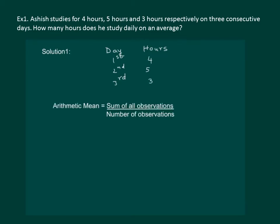We are asked to find the average of the number of hours he studies. So, actually we have to calculate arithmetic mean. Let us put in the formula. Sum of all the observations would mean 4 plus 5 plus 3 whole divide by number of observations is 3.